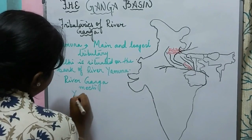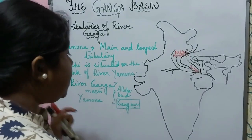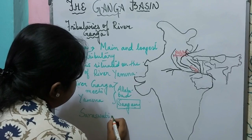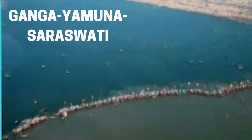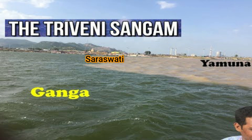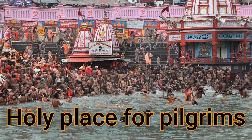The river Ganga meets the Yamuna, and together they form the Sangam. Another river that joins with the Ganga and Yamuna is the river Saraswati, and together the three rivers form the Triveni Sangam.